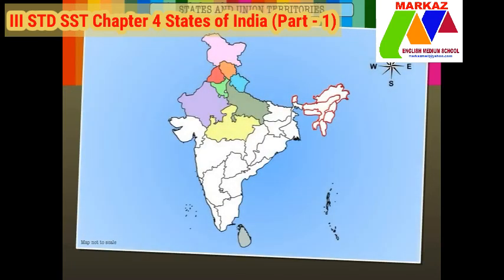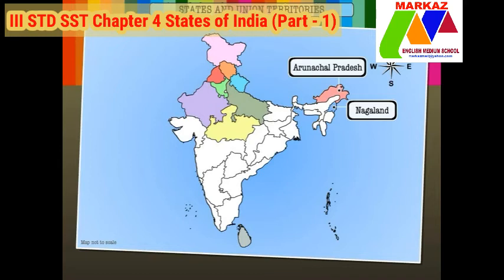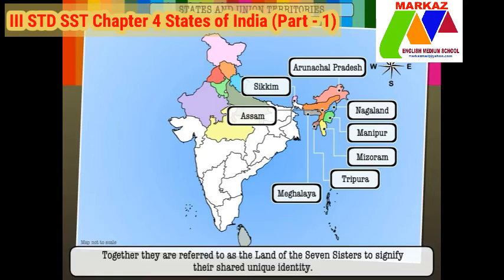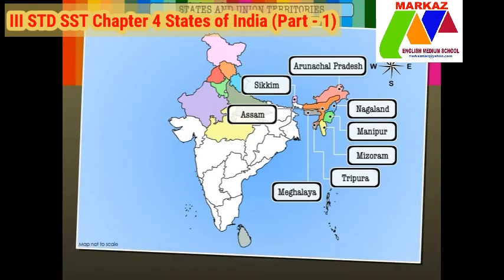The north-eastern region of India includes the states of Arunachal Pradesh, Nagaland, Manipur, Mizoram, Tripura, Assam, Meghalaya and Sikkim. Together, they are referred to as the land of the seven sisters to signify their shared unique identity.